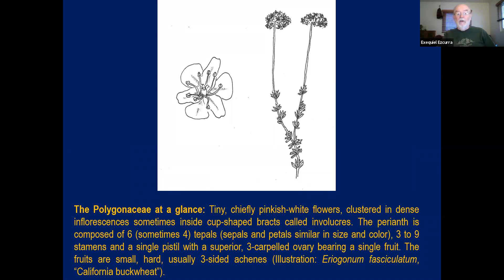This is an illustration of Eriogonum fasciculatum, one of the most common plants in chaparral and on hillsides around the cities in Southern California. As the name suggests — fasciculatum — the leaves form fascicles at the nodes of the stem. You can see here an illustration of a flower. The petals are large, slightly wider than the sepals, but they look very similar. The stamens normally number between six and eight, and you can see the ovule inside with the three stigmas coming out.